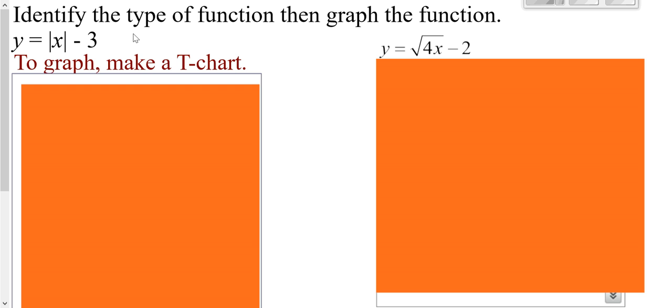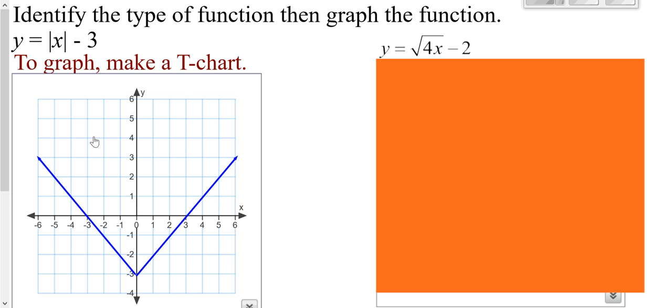So here you need to identify the type of function. This one is an absolute value function because it has this absolute value. Then you should remember from earlier in the course to graph absolute value, you set what's on the inside equal to zero. In this case, that's zero. And then you choose at least three numbers on each side of that and make yourself a t-chart. If you do that, you should get the shape of a V like this.